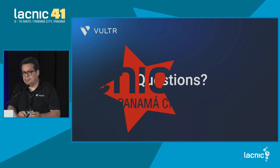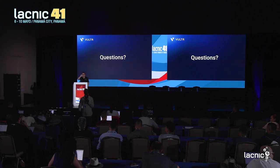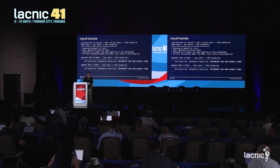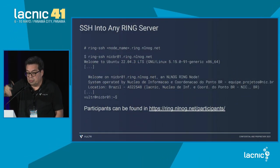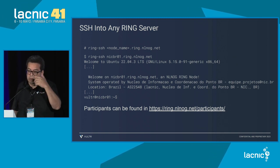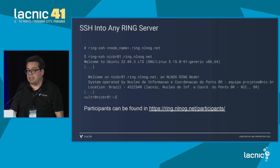Any questions? Pablo asks: the Ring command set, is it pre-established? If I want to run my own script, is it possible? Yes, it is. At the end of the day, you have a ring SSH, but you could have a regular SSH to ring nodes. You can have a script that will SSH the different servers through an API — an API that will tell you the name of all servers — and you can use that to start working.